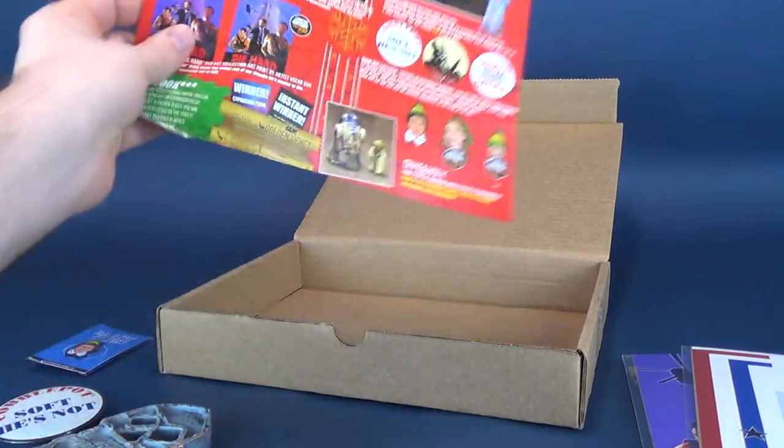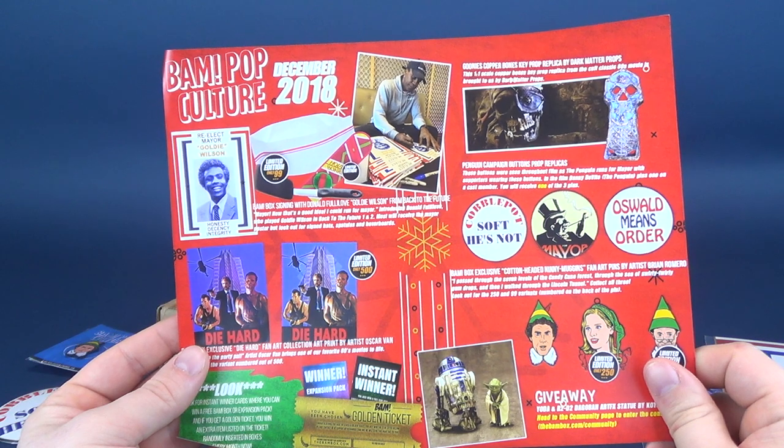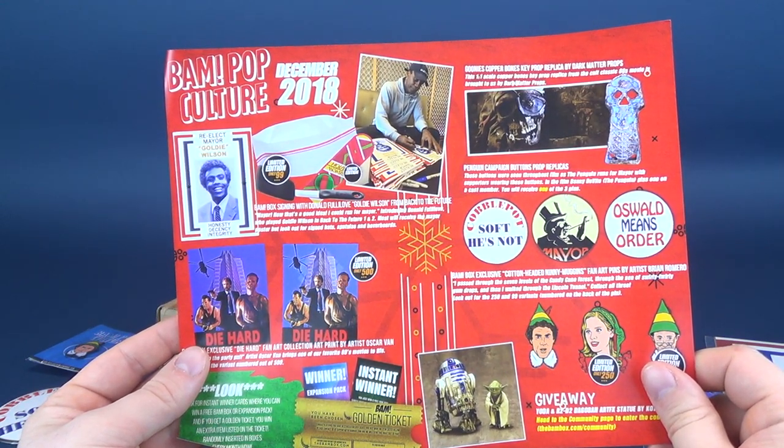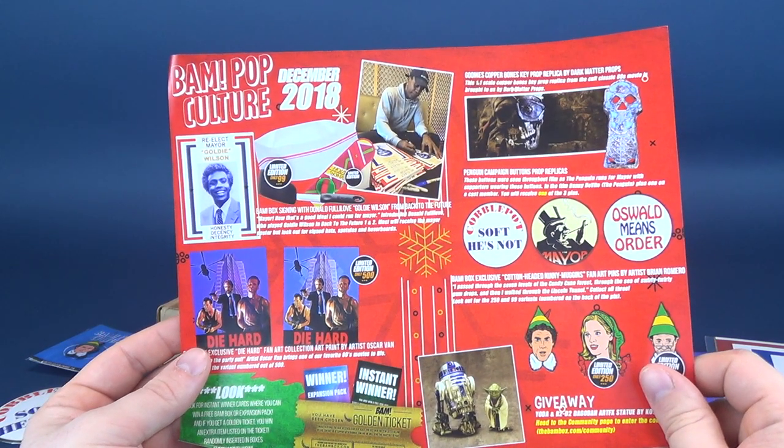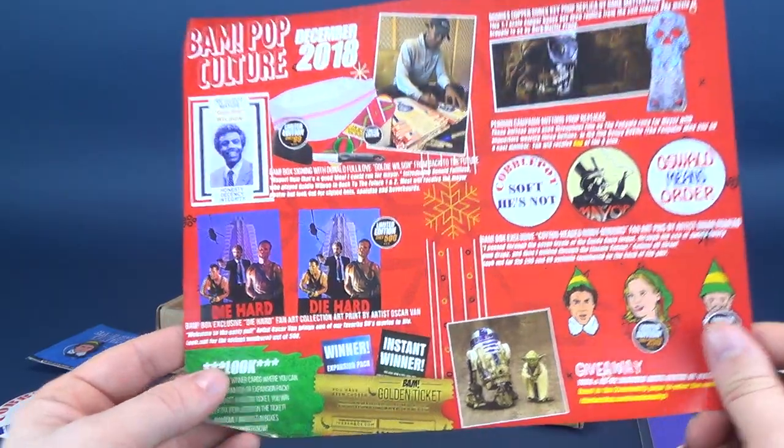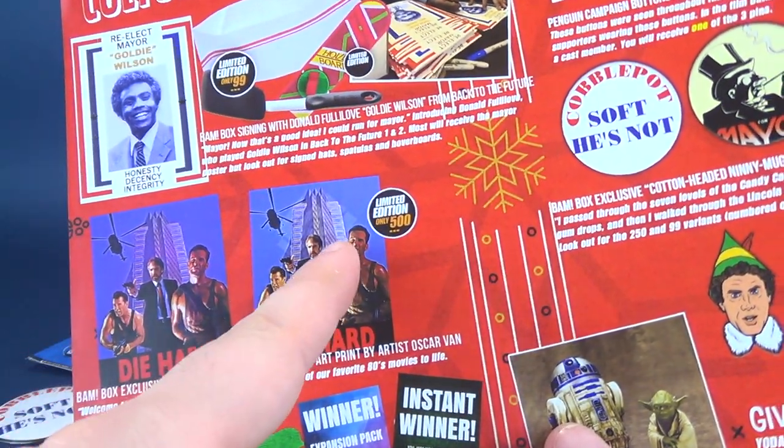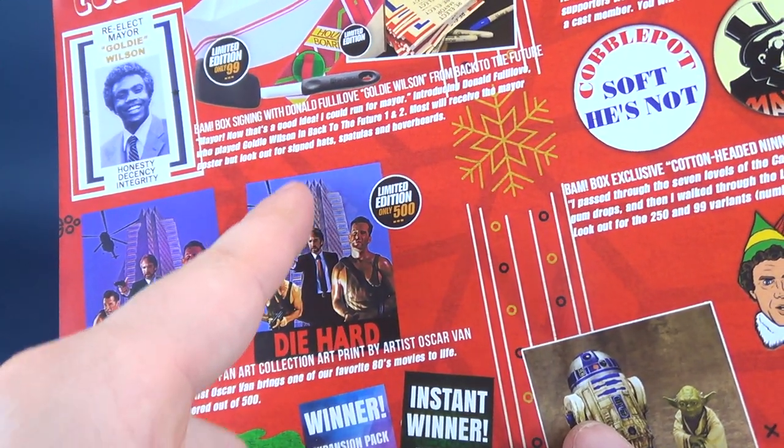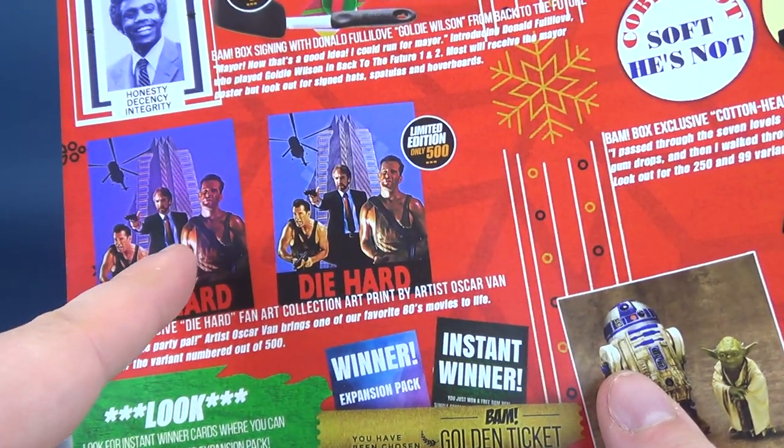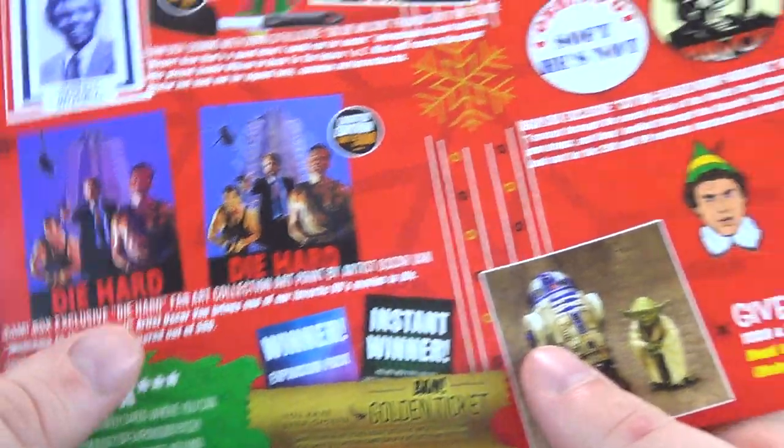Then of course we've got all the things, all the trinkets inside that we also got included. This is all for December 2018. We got the BAM box signing with Donald Fullilove, Goldie Wilson from Back to the Future. We got the Die Hard autograph prints. Now there were two variations, what is the difference? This one's kind of got like an image or something on top of it. This one has a slightly more purpley tint to it.